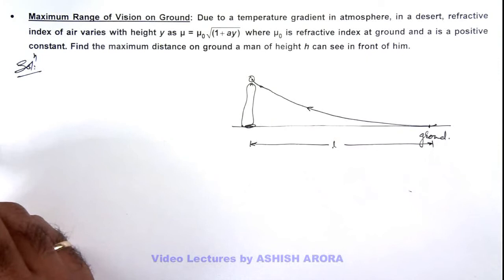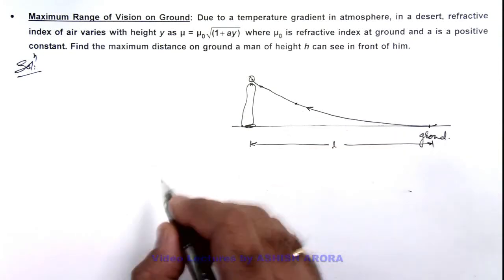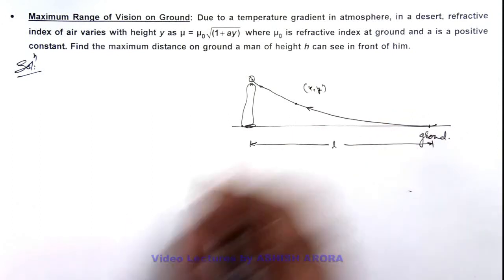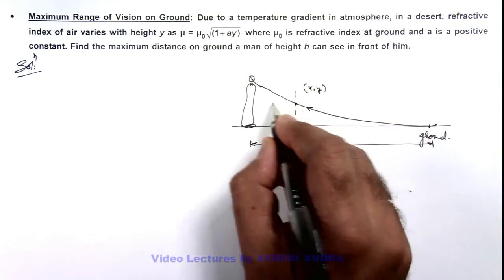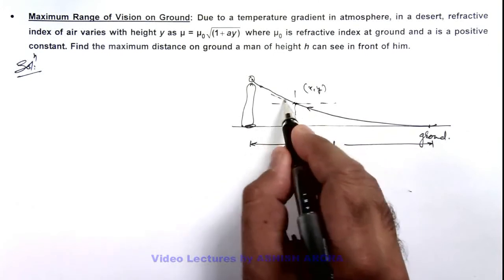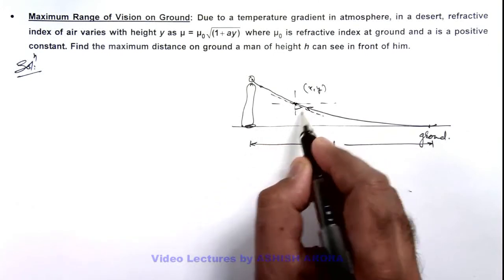Here in this situation again we can consider a general point which is having coordinate x, y. And in this situation if we consider the slope angle of this trajectory, here we can write if this angle is θ.